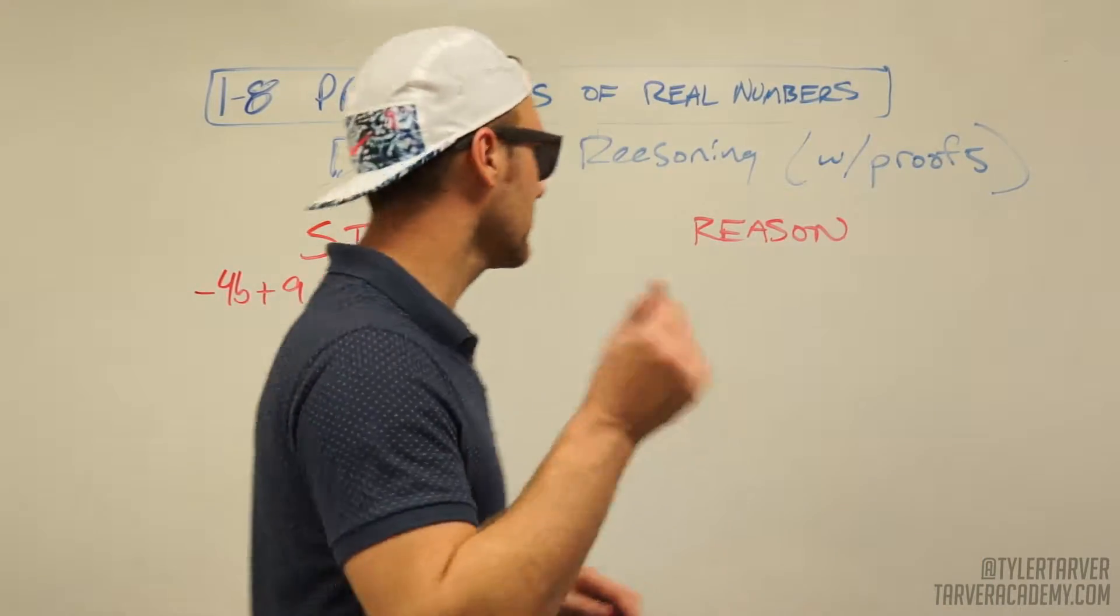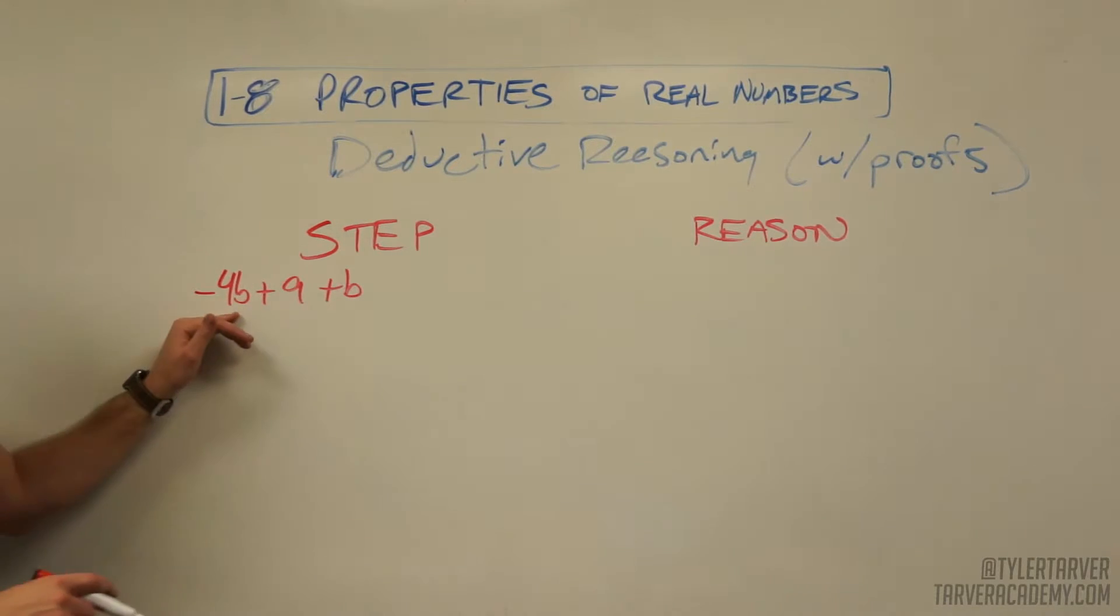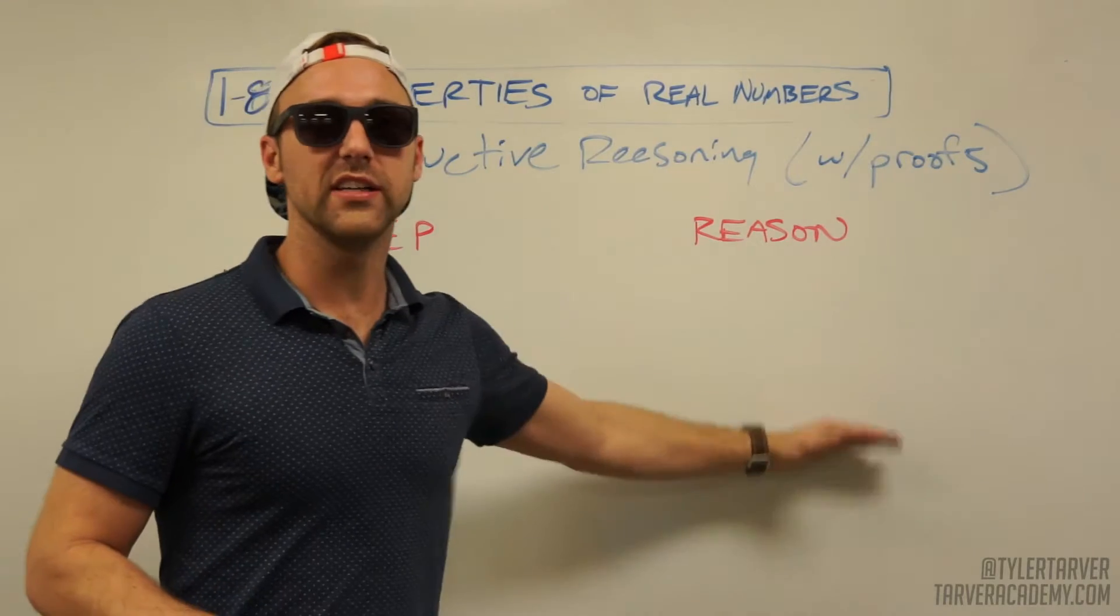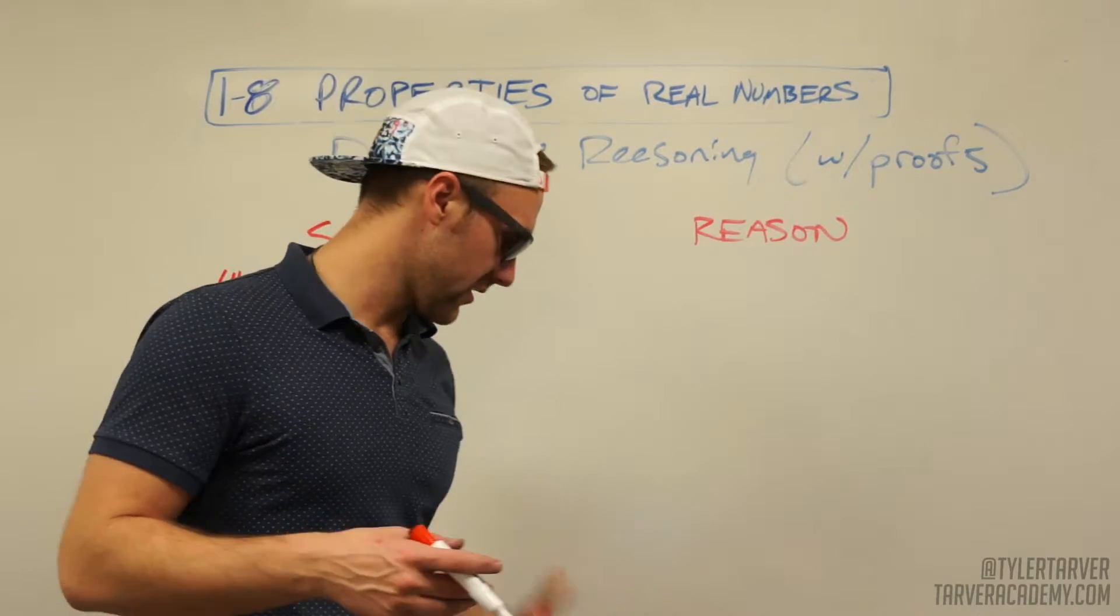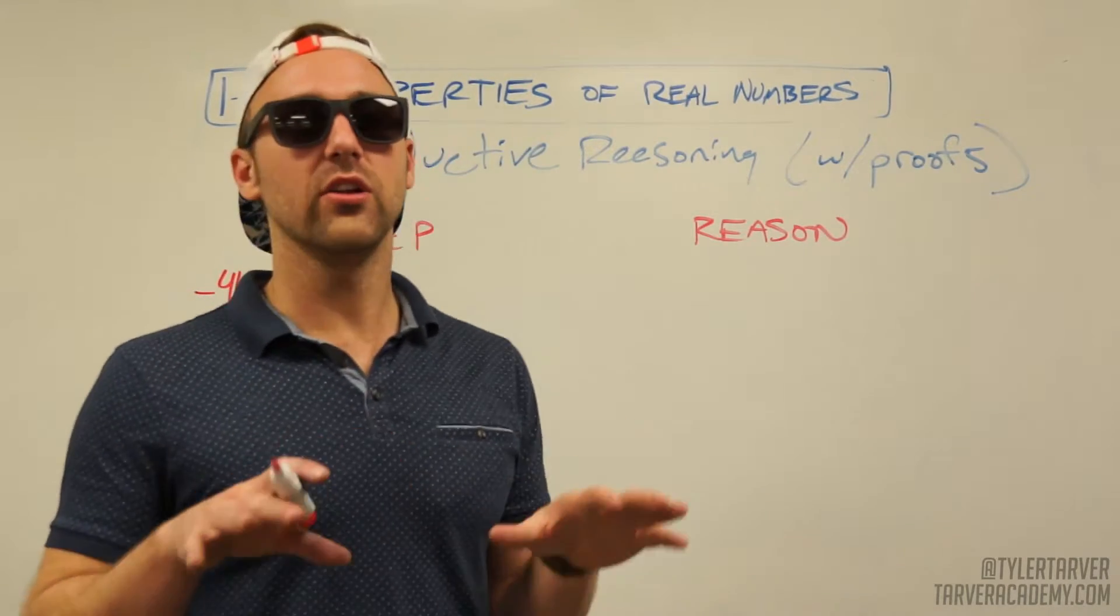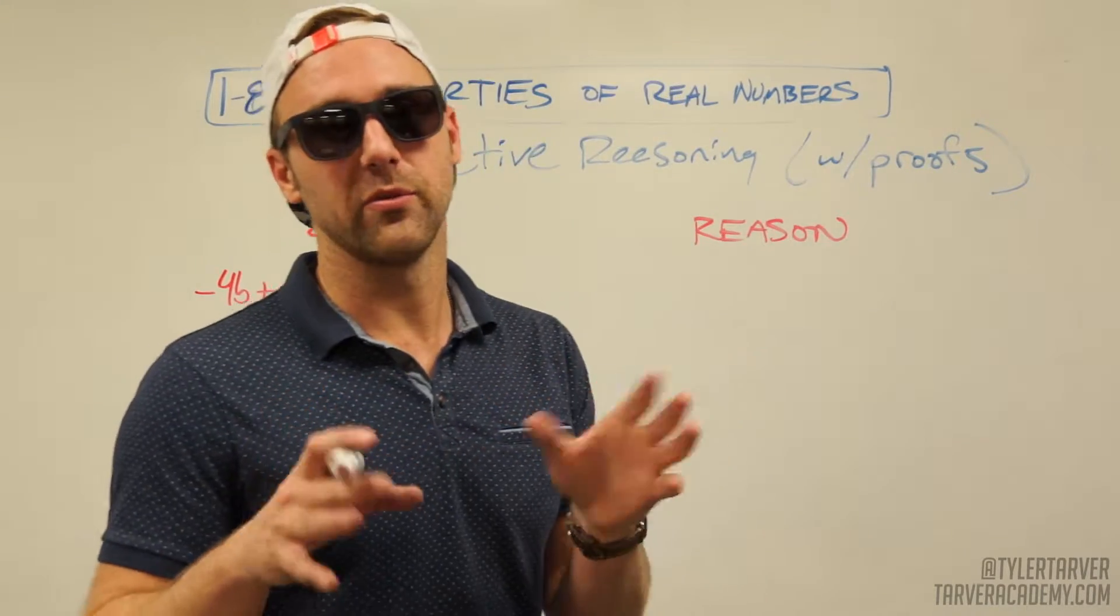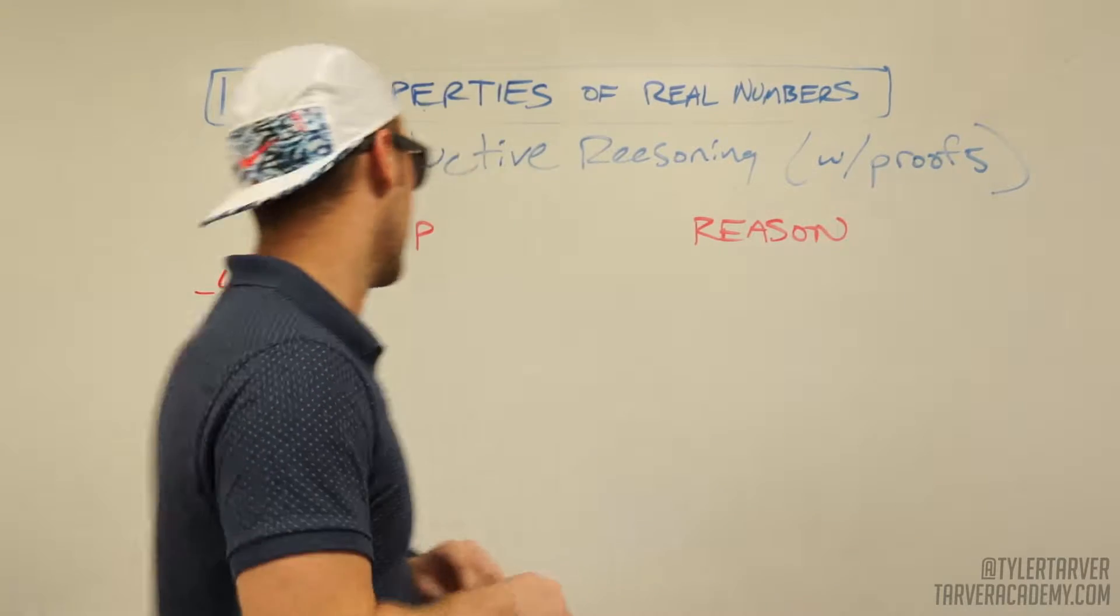So we want to solve negative 4B plus 9 plus B and then I want to show reasons for why I'm able to do it. We're going to utilize a lot of the properties that we used earlier in the chapter.